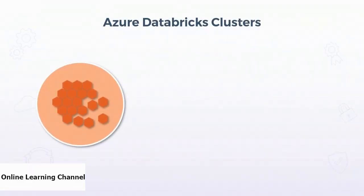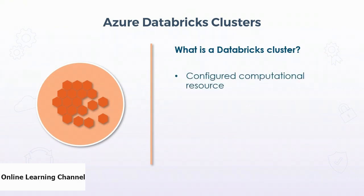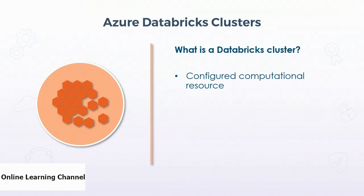All the code in an Azure Databricks workspace runs on a cluster. A Databricks cluster is a configured computational resource — under the hood, it's an Apache Spark cluster, which is a platform for running Apache Spark. Apache Spark clusters are optimized for handling big data processing in parallel for high performance. In the context of Databricks, a Databricks cluster can run one or more workloads.